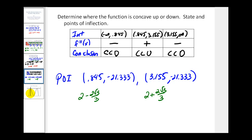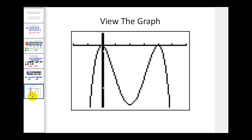Looking at a graph of the original function, we can see the two relative maxima and the relative minimum we found. Just below x equals 1, we can see the first point of inflection where the function changes from concave down to concave up, and another point of inflection near x equals 3.155. This graphically verifies our work. I hope you found this video helpful. Thank you for watching.